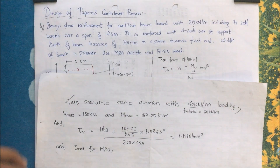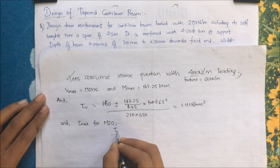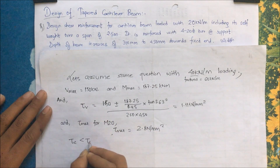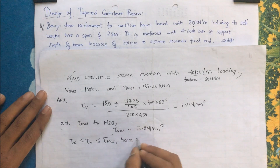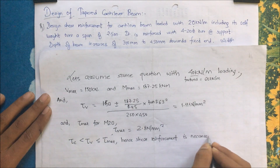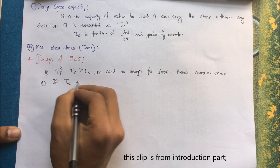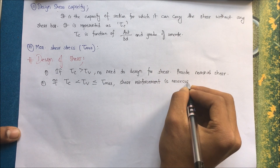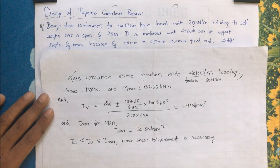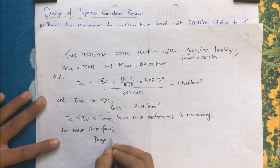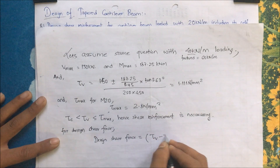The maximum shear strength of M20 concrete is tau_max = 2.8 N/mm². Since tau_c < tau_v ≤ tau_max, shear reinforcement is necessary because the shear strength of the concrete is less than the acting shear stress, but the section does not need to be redesigned since tau_v is within the maximum limit.